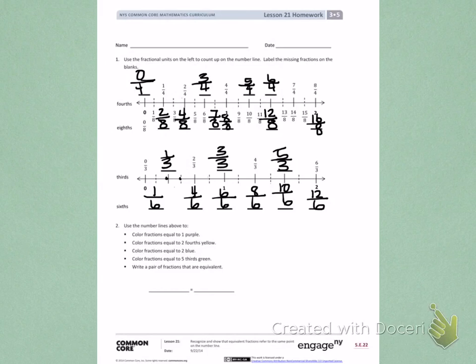Number 2. Use the number lines above to color fractions equal to 1 purple. So, I'm going to find the number 1 on my number lines. Here is a 1. Here is a 1. That means 4 fourths is equal to 1. 8 eighths is equal to 1. 3 thirds is equal to 1. And 6 sixths is equal to 1. They are all equal to 1 because they are above and below the number 1 on the number line.